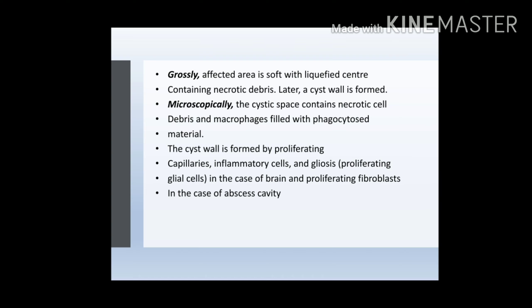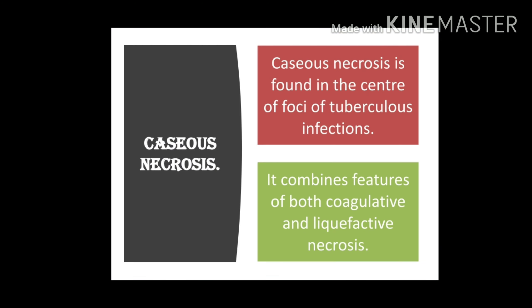Caseous necrosis is a combination of both coagulative necrosis and liquefactive necrosis. The outer structure of the cell is recognizable, but internally there is liquefaction — that's why it is called a combination of both types. Caseous necrosis is formed in cases of bacterial and fungal infection. The most common example of bacterial infection is Mycobacterium tuberculosis.